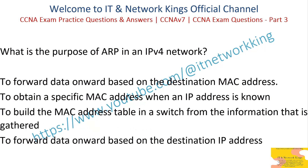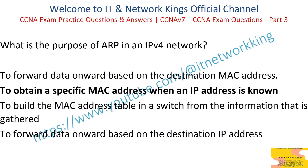What is the purpose of ARP in an IPv4 network? To forward data onward based on the destination MAC address. To obtain a specific MAC address when an IP address is known. To build the MAC address table in a switch from the information that is gathered. To forward data onward based on the destination IP address. Answer: To obtain a specific MAC address when an IP address is known.